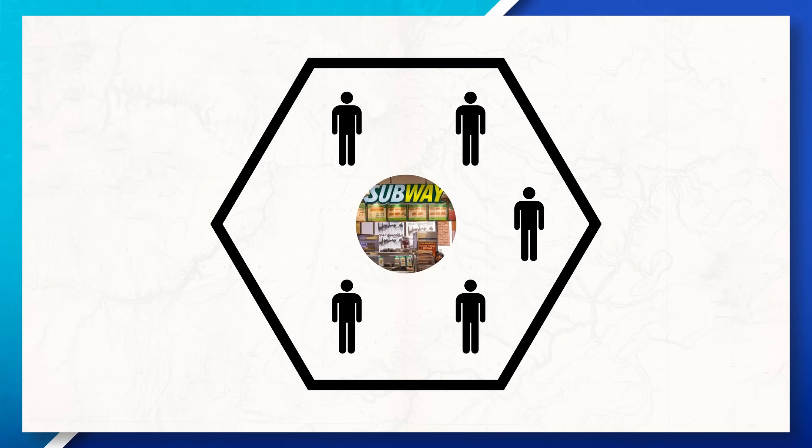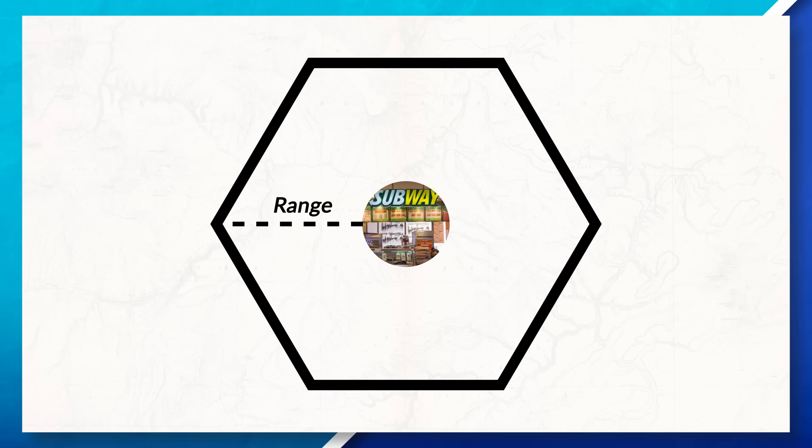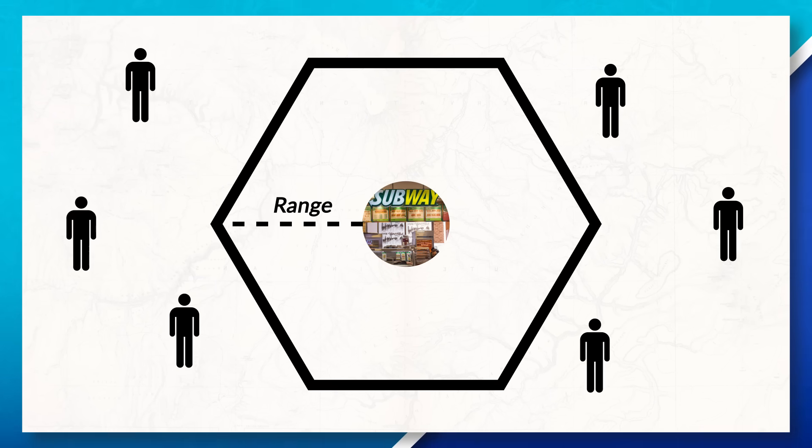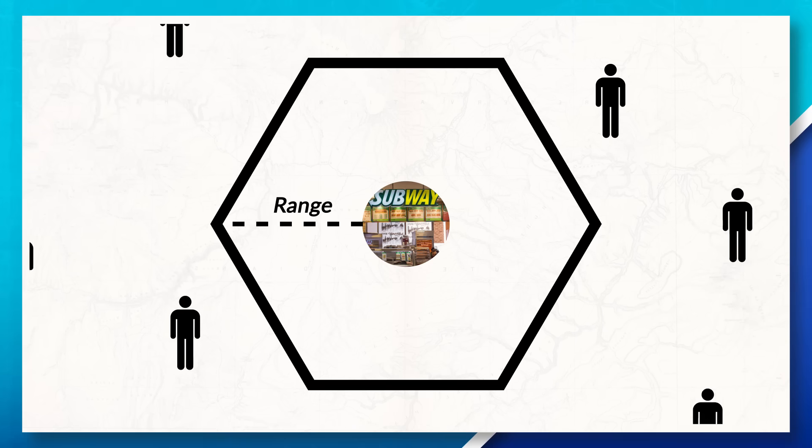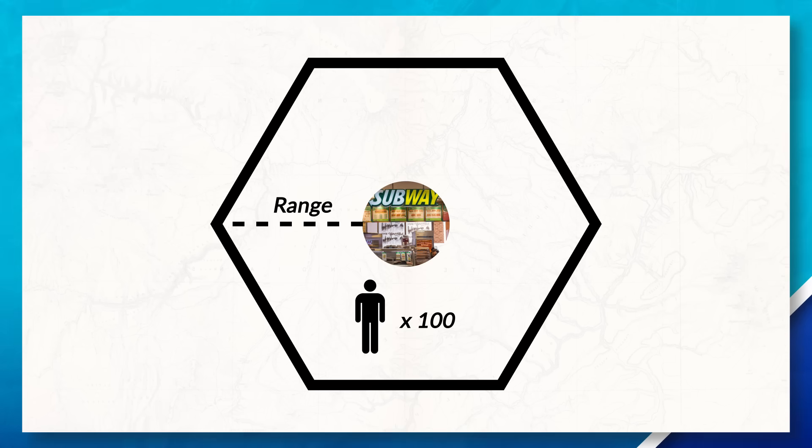To make sure you're understanding these concepts, let's look at how we could apply them to the world today. Here you can see we have a hexagon showing the market area for a subway. Remember the distance from the subway store to the edge of the hexagon is the range. Any people located inside this hexagon would go to this store location for subway. If a person was located outside of this region, they would end up going to a different store location. Now let's say that this store location needs to have a minimum of 100 customers a day in order to remain open. This would be an example of a threshold. Now unfortunately for our subway store, we can see that there are not 100 people living inside our market area, so this store would most likely go out of business if it tried to open in this location.